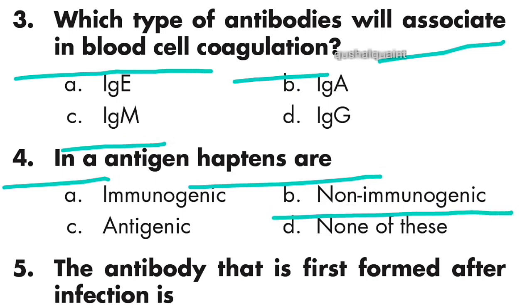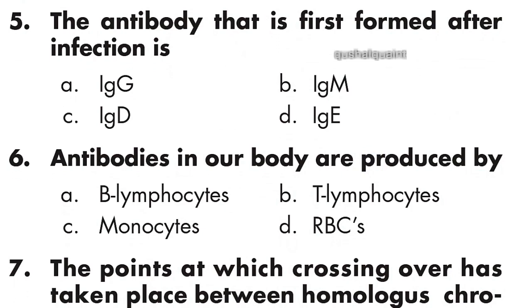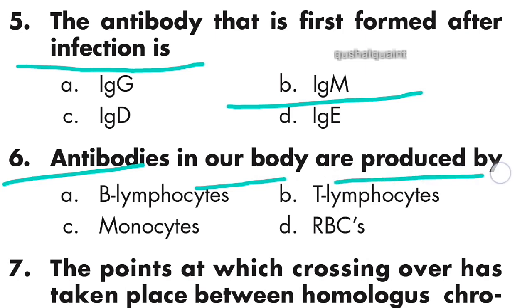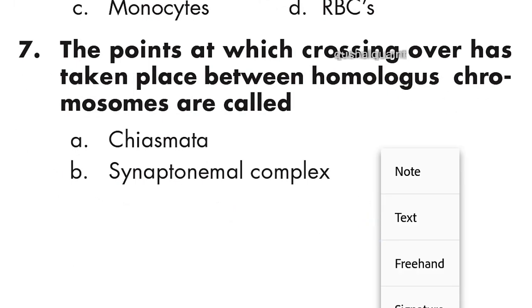Question 4: Antigen haptens are non-immunogenic, option B is right. Question 5: The antibody that is first formed after infection is IgM, option B is right. Question 6: Antibodies in our body are produced by B lymphocytes, option A is right.